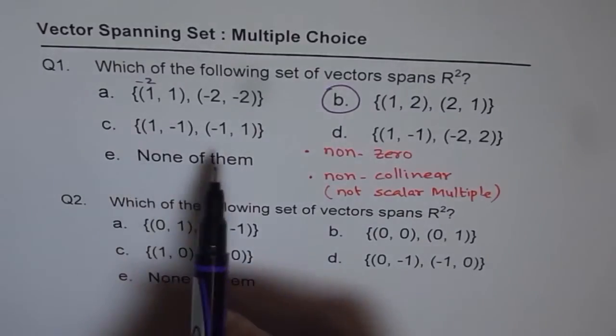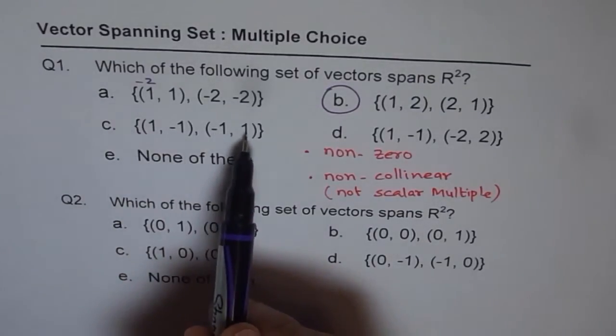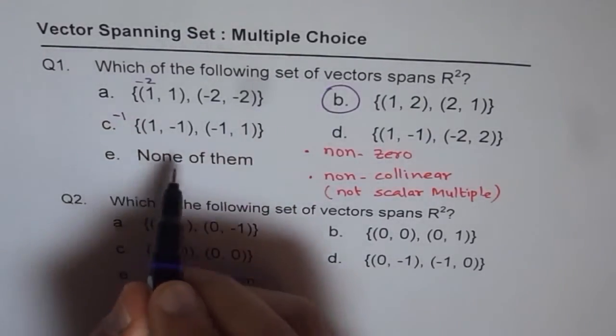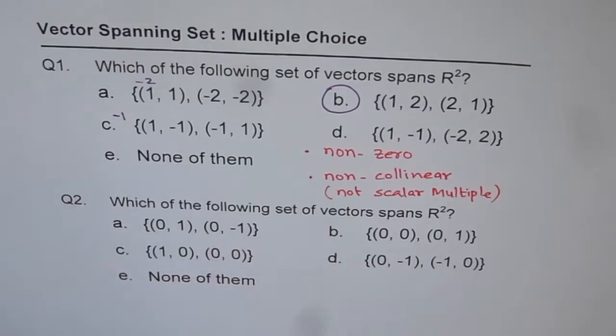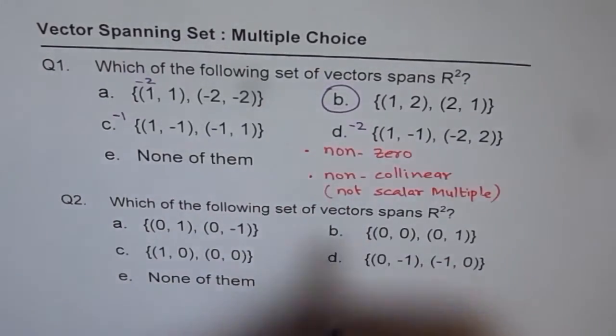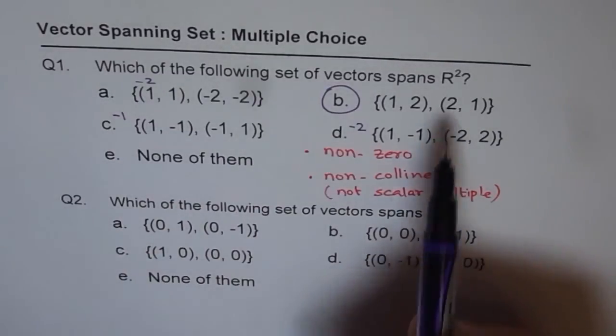Well let's check the others also. (1, -1) and (-1, 1). In this case if I multiply this by -1 I get the other one. So they are scalar multiples. Here again we can multiply by -2. So none of them is not the option. The option is B.